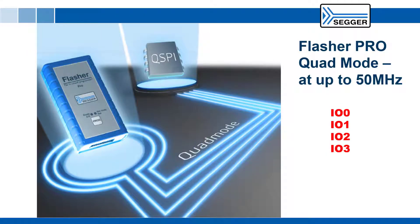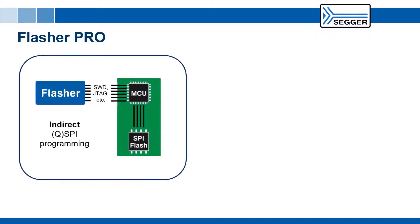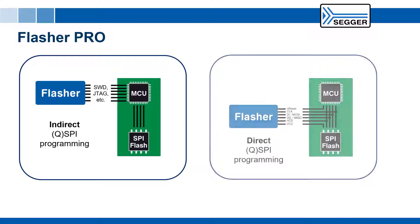The latest generation of the SEGGER Flasher Pro is able to program QSPI Flash in Quad Mode at up to 50 MHz, maximizing programming speed for production environments. The Flasher Pro can program QSPI Flash memories indirectly via the microcontroller or SOC, or directly by connecting straight to the pins of the QSPI Flash.